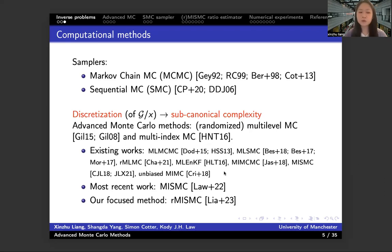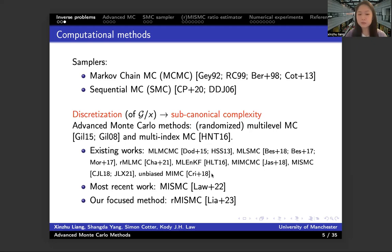There are some existing works that apply this multi-level and multi-index method in the inference context. The most recent and related one is a paper published last year: a method called the multi-index sequential Monte Carlo ratio estimator. The method I'm going to introduce here is a randomized version of it. Because we use the randomized setting, we solve many drawbacks of the non-randomized method. The two main benefits are: we can achieve the canonical complexity automatically, and the assumptions needed are dimension independent. Additionally, this randomized method is an unbiased estimator, unlike the non-randomized method.